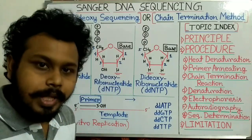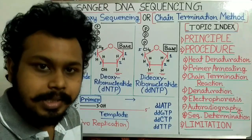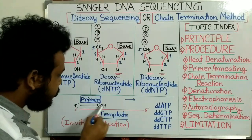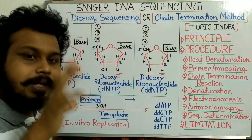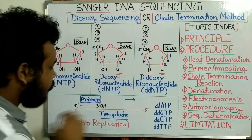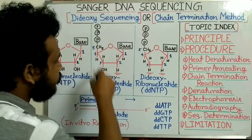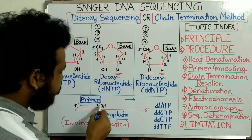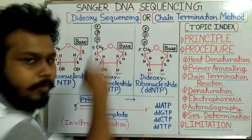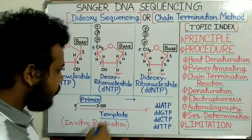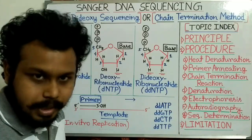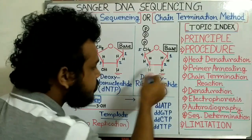For DNA replication or nucleotide polymerization, we need a template DNA strand and a primer which gives us the free 3' OH group required for DNA polymerase to add new nucleotides. When a new deoxyribonucleotide comes, the 3' OH interacts with the 5' phosphate group; the two phosphate groups are removed and a phosphodiester bond is created between the 3' OH and 5' phosphate, completing polymerization.